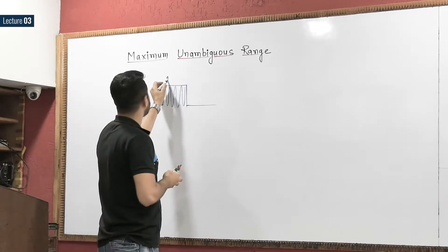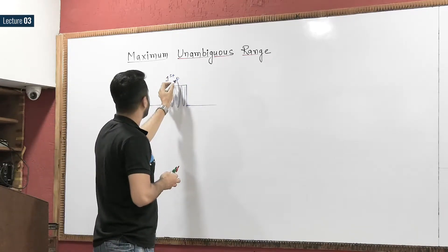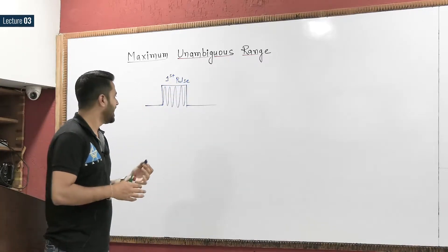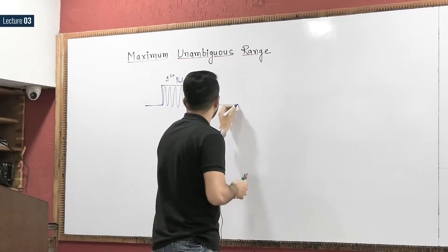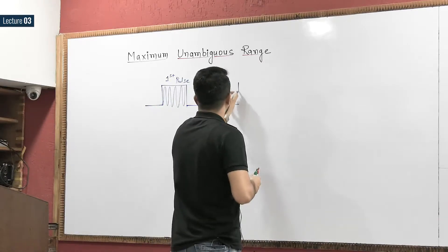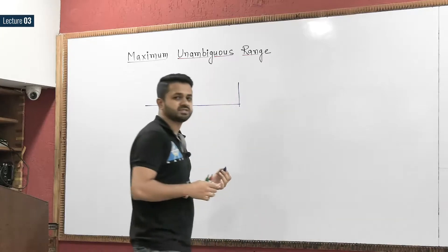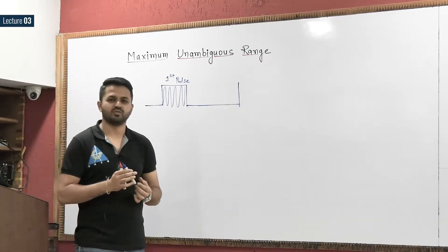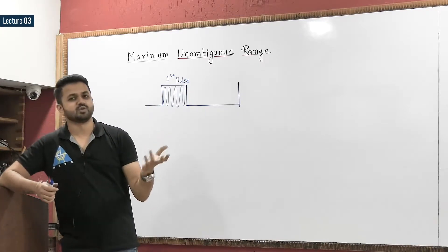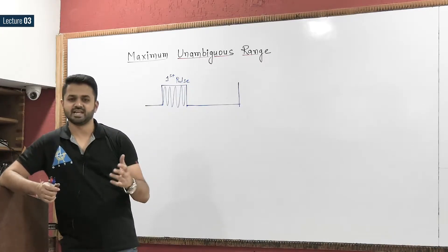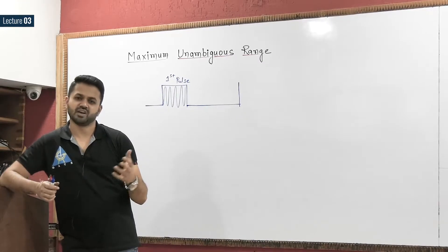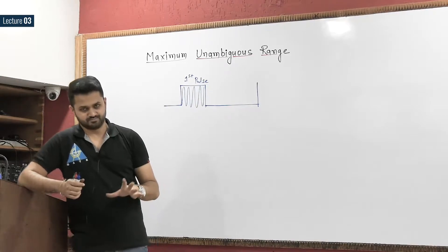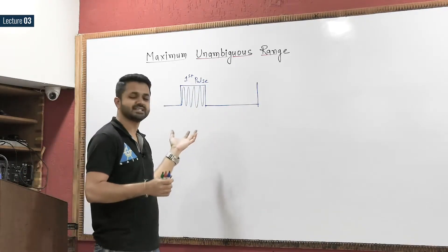Here we are transmitting the first pulse and waiting for the echo signal. After waiting some time, suppose we don't get any echo signal. We might think there is no target, because if there were a target the signal would be re-radiated and we should receive it, but we are not getting any signal.